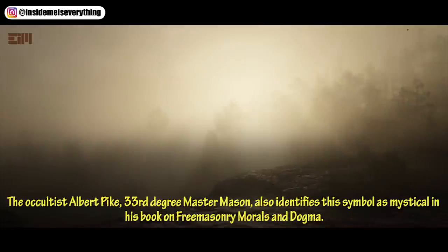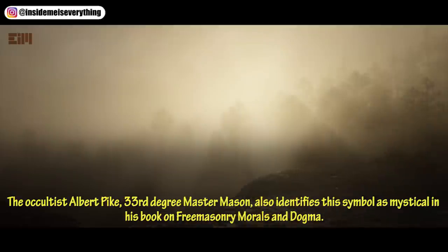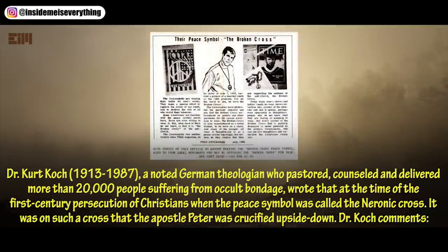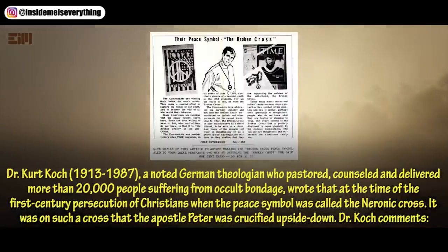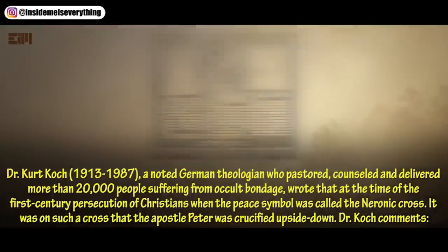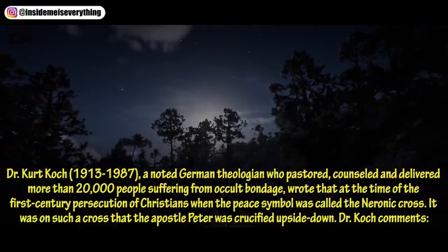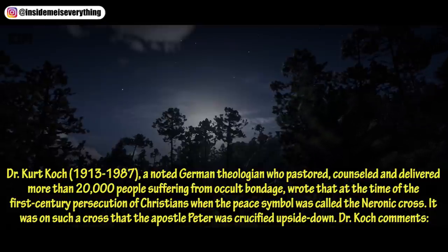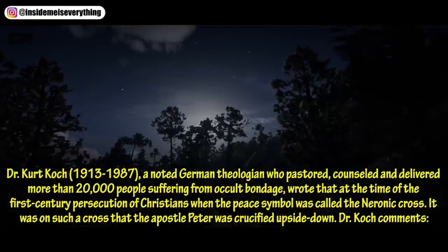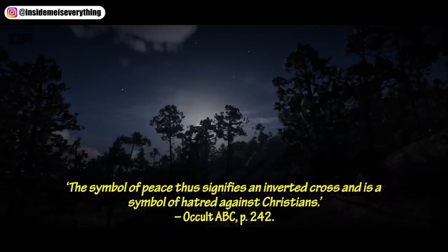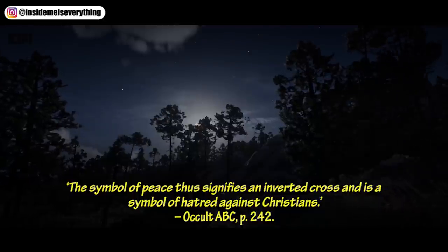The occultist Albert Pike, 33rd degree Master Mason, also identifies this symbol as mystical in his book Morals and Dogma. Dr. Kurt Koch (1913–1987), a noted German theologian who pastored, counseled and delivered more than 20,000 people suffering from occult bondage, wrote that at the time of the first-century persecution of Christians, when the peace symbol was called the Neuronic cross, it was on such a cross that the apostle Peter was crucified upside down. Dr. Koch comments: the symbol of peace thus signifies an inverted cross and is a symbol of hatred against Christians.